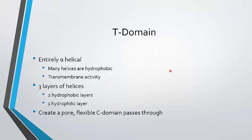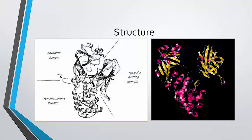The next thing we're going to talk about is the T domain of the protein. This is the transmembrane domain of the protein. It is entirely alpha helical. Many of these alpha helices are hydrophobic, and thus we can conclude that they have transmembrane activity. There are three layers of helices with two hydrophobic layers and one hydrophilic layer. The hydrophilic and hydrophobic layers create a pore which allows the C domain, which carries the catalytic activity necessary for destruction of the cell. Here you can see all these alpha helices. There's just so many of them, and that's why we can conclude that this is the transmembrane portion along with their hydrophobic character.